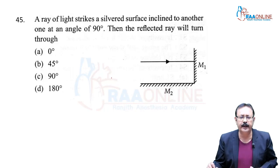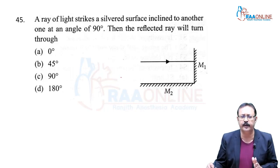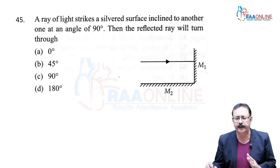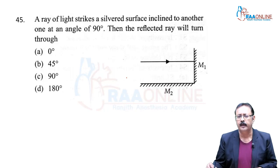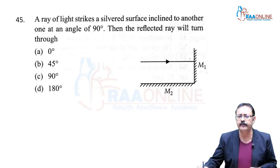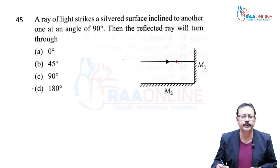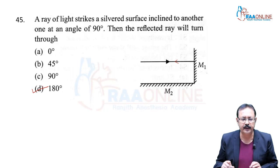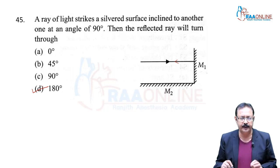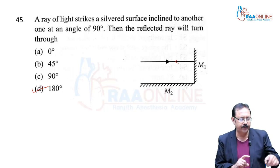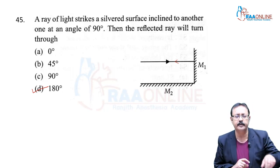Problem 45. A ray of light strikes two silvered surfaces inclined at 90° to each other. The reflected ray will turn through 180°. The correct answer is option D. That completes this session. Thank you.